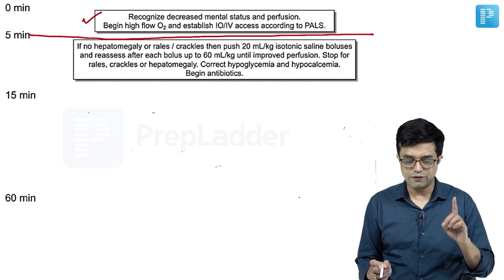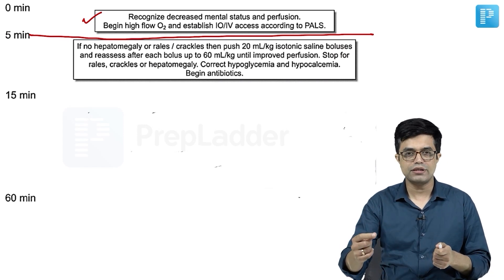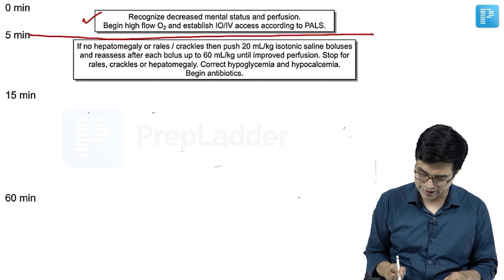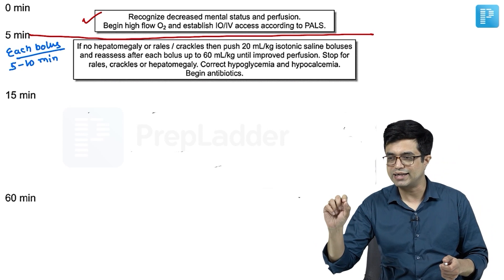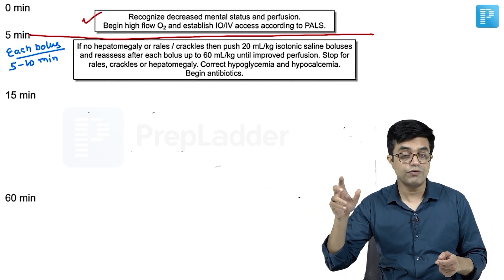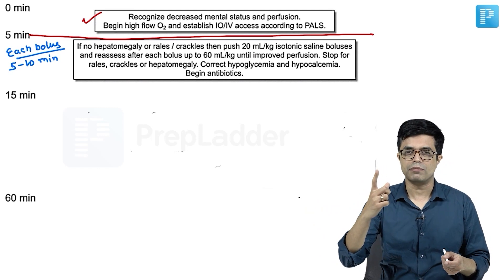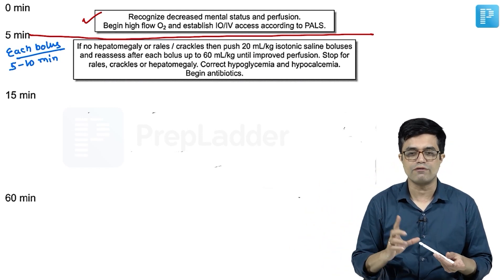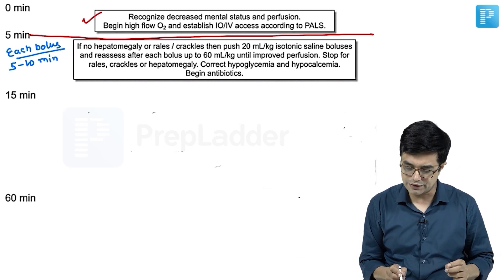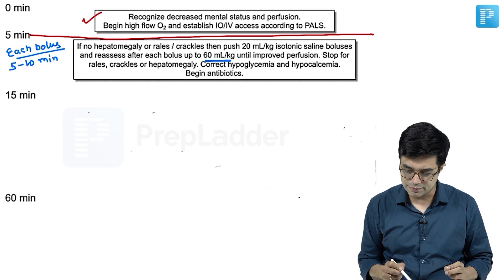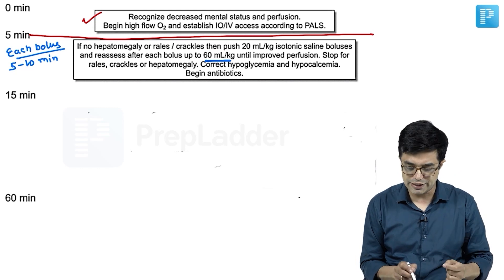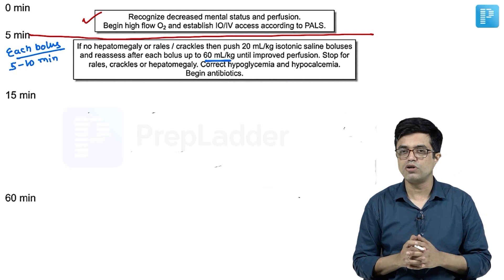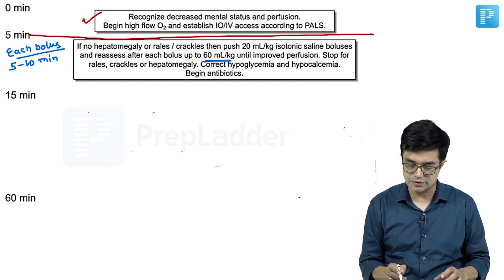After each 20 ml per kg bolus, you will reassess the patient. Each bolus should be given over 5 to 10 minutes. If shock is not improving and there are no features of volume overload, give another bolus of 20 ml per kg over 5 to 10 minutes, then reassess again. Total of 3 boluses can be given — up to 60 ml per kg — until improved perfusion occurs. You will stop immediately regardless of the number of boluses if features of volume overload such as rales, crackles, or hepatomegaly develop.